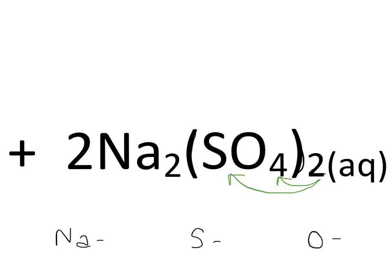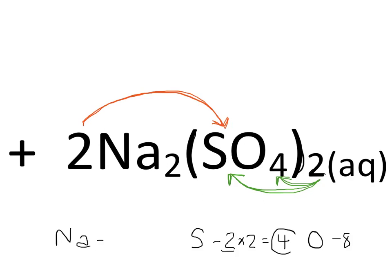So that two multiplied by the four gives us eight, and that two multiplied by the one gives us two for sulfur. However, we also have to remember that there's a coefficient of two in front of this entire compound, which applies to every element, including the ones in the parentheses. So we take this coefficient of two and multiply it by our new subscript of two for sulfur to get a total of four sulfur atoms, and we multiply the coefficient of two by our subscript of eight to get 16 total oxygen atoms.